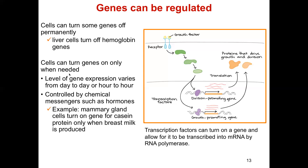Some genes can be permanently turned off in certain cell types. Other genes can only be turned on when needed — for example, in the mammary gland the gene for making milk protein is turned on when you need to make milk. You can regulate it through hormones and growth factors, like prolactin. There are many layers of regulation to these genes.